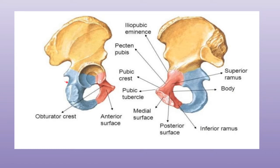Below the greater sciatic notch there is a spine known as the ischial spine, and below this ischial spine there is another notch known as the lesser sciatic notch. The lateral border of the ischium forms the lateral margin of the ischial tuberosity, except at the upper end where the tuberosity is rounded.